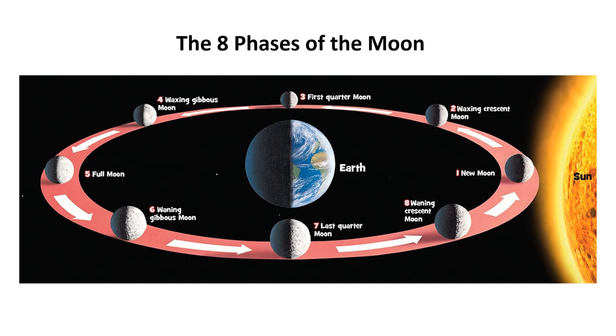Number six is the waning gibbous moon. That's when it's starting to disappear again. Number seven is the last quarter moon. That is the same as what I talked about before—we can see half of it, but we're seeing the other half. For the first quarter moon it was lit up on one side, this time it's lit up on the other side as it starts to disappear. Number eight is the waning crescent moon, where it's almost disappeared again, ready to go back into the phase of the new moon.